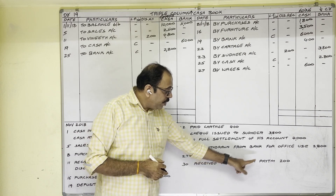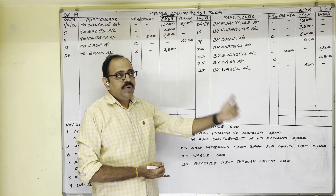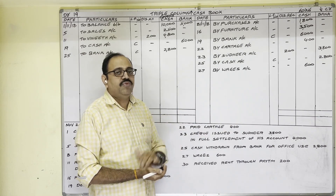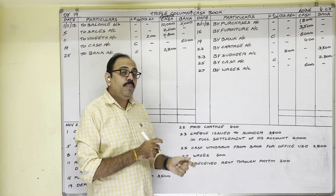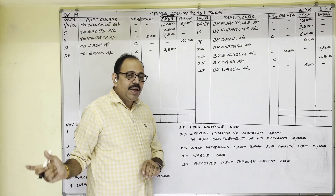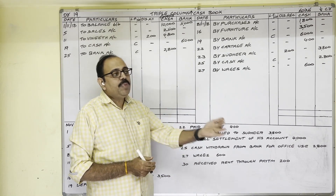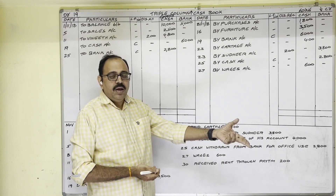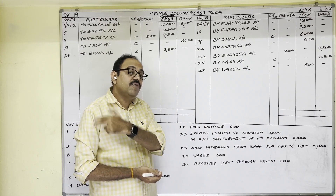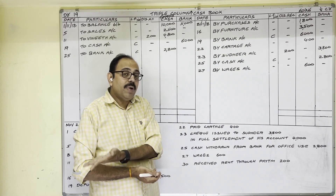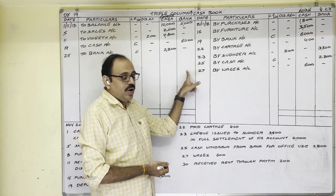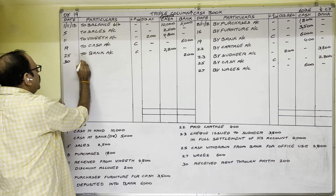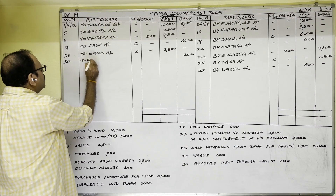30th November: Received rent through Paytm, 200 rupees. The tenant paid through Paytm instead of cash or cheque. Our bank account is linked with Paytm, so when he pays, money is debited from his bank account and credited to our bank account — our bank balance increases. Therefore debit side bank column, 30th date, 200 rupees in the bank column. Write 'To Rent Received account'.